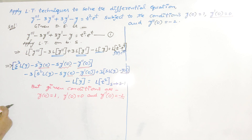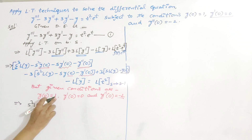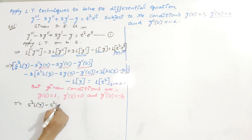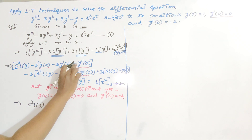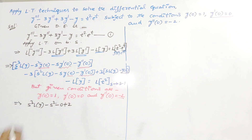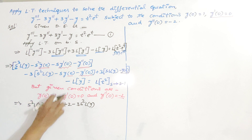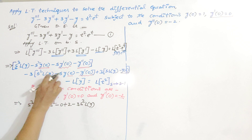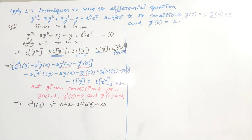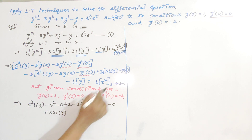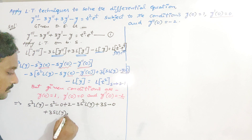The equation becomes: S³ × L{y} minus S² × 1 minus S × 0 minus (-2), giving plus 2; minus 3 times (S² × L{y} minus S × 1 minus 0), giving minus 3S² L{y} plus 3S; plus 3 times (S × L{y} minus 1), giving 3S × L{y} minus 3; minus L{y}. The constants simplify: 2 minus 3 gives minus 1, taken to the right side gives positive 1.